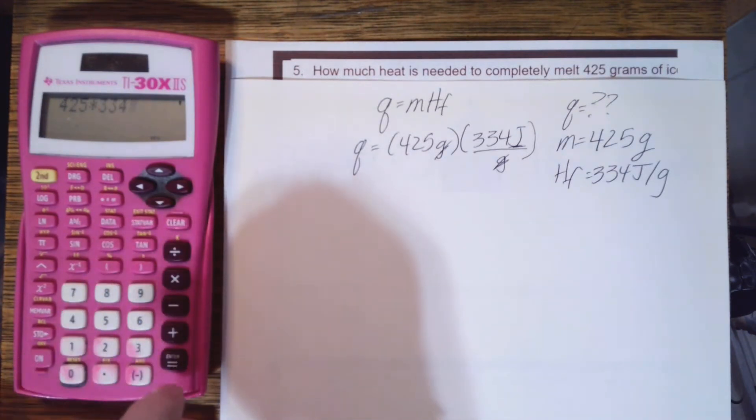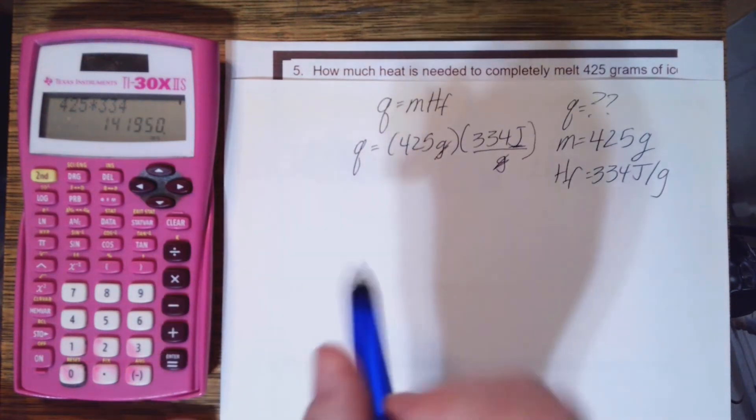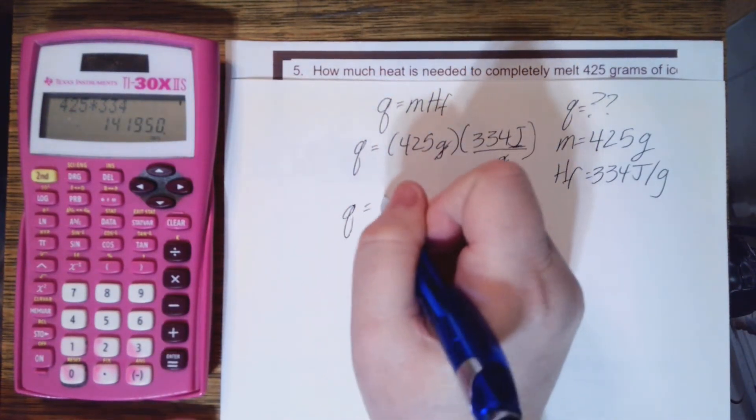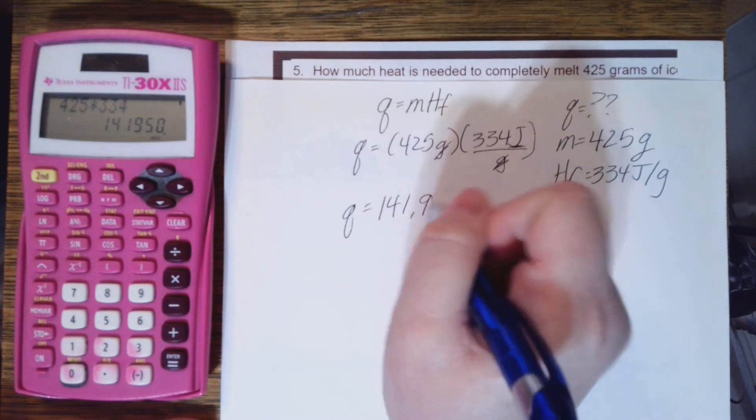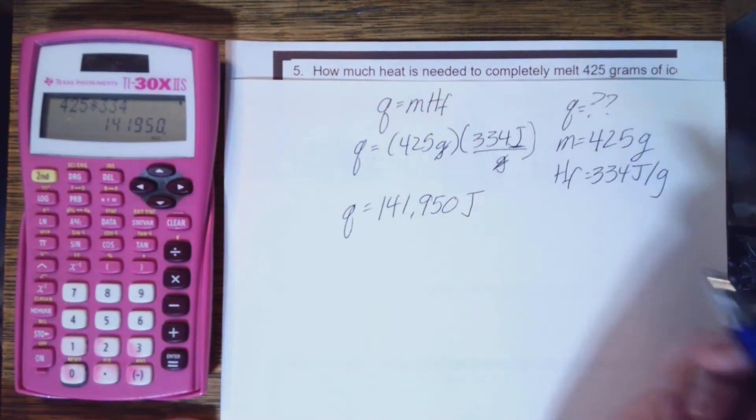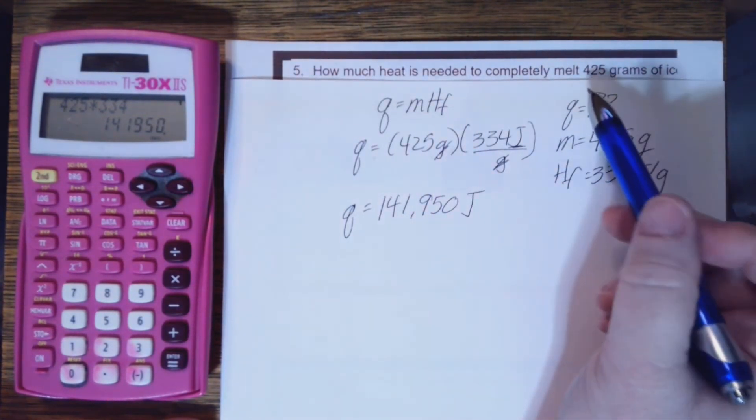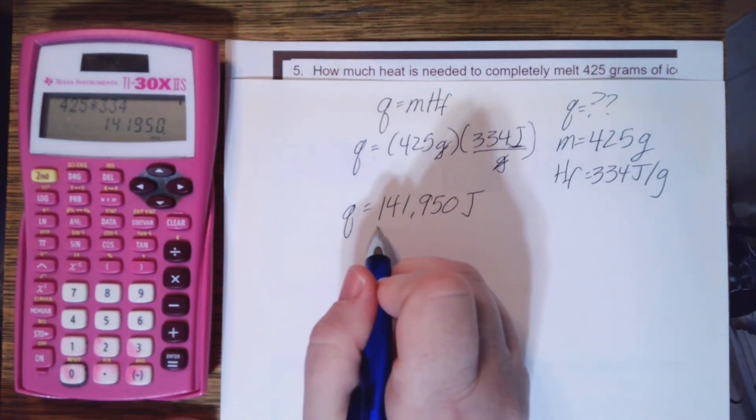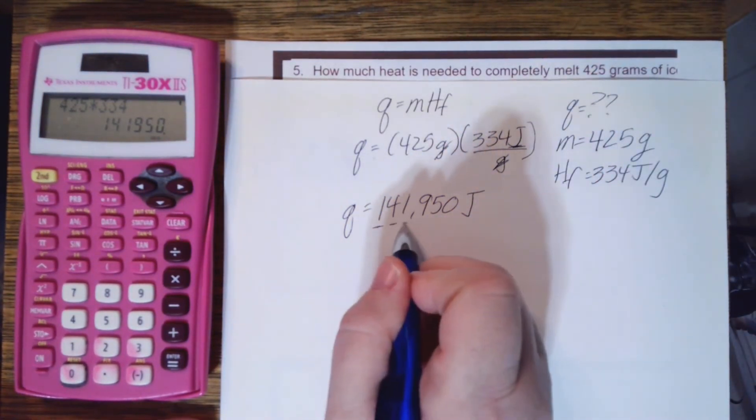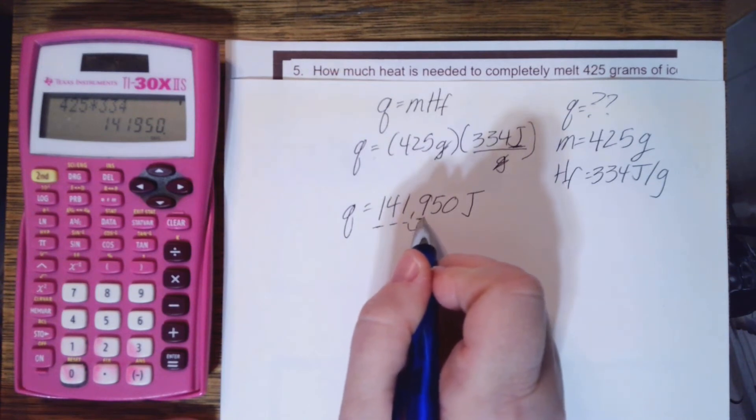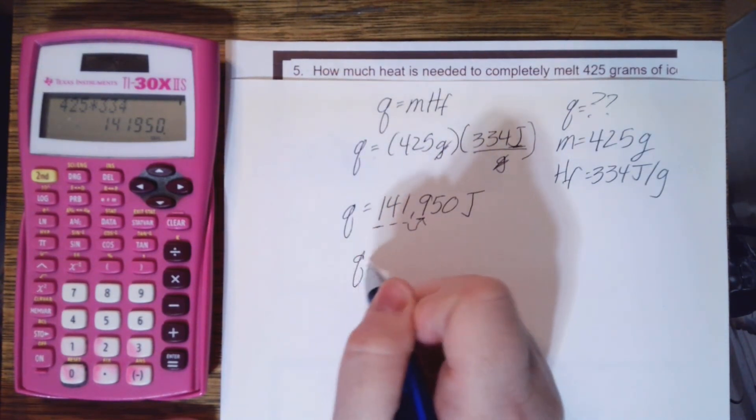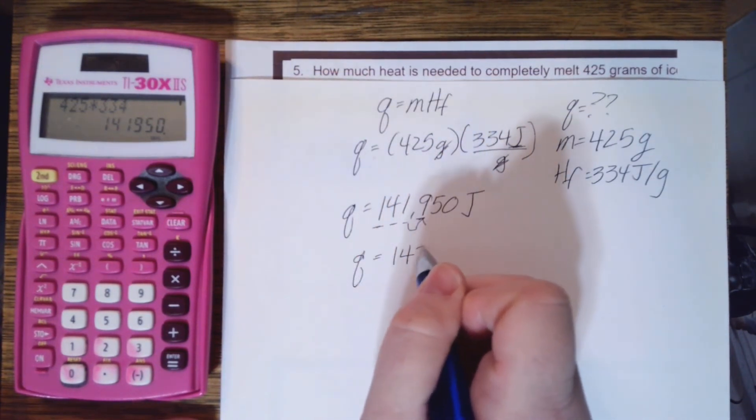Joules is a unit for heat, so all I have left to do in my calculator is do 425 times 334 equals 141,950 joules. Let's think about significant figures: three here, there should be three in my answer. One, two, three, look at the next digit. It tells me to round up.